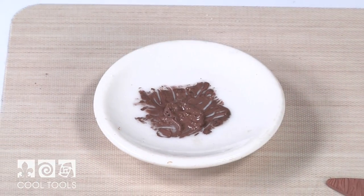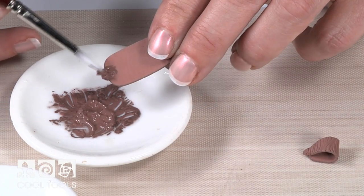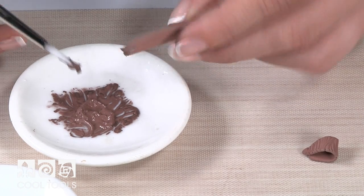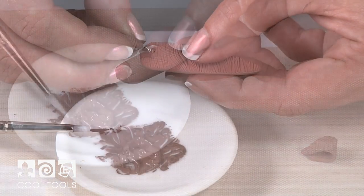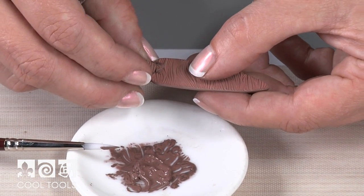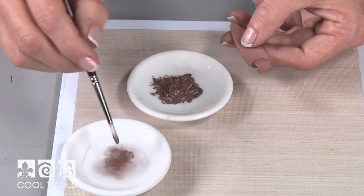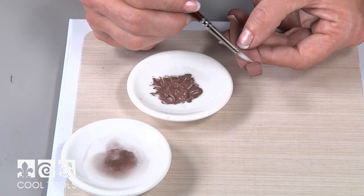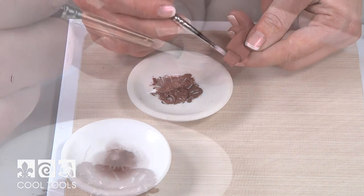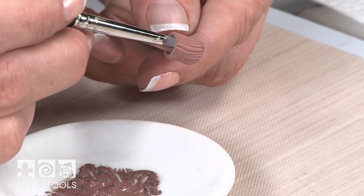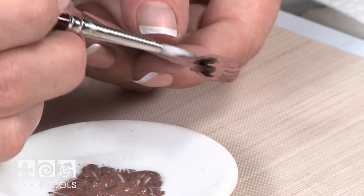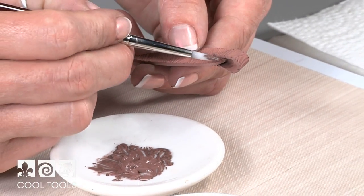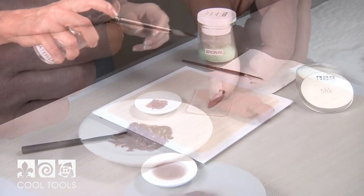To bond the bale to the pendant, apply the slip to the pendant where you will be attaching the bale. Coat both the front and back sides. Place the bale and pinch it into place. Smooth the excess slip if any with an artist brush. Dip the artist brush into water and blot on a paper towel. Blend the seam where the bale meets the pendant to finish the join, then set aside to dry.